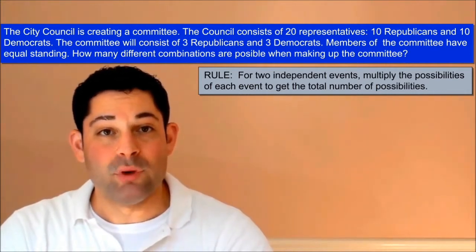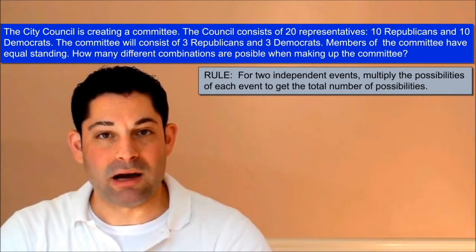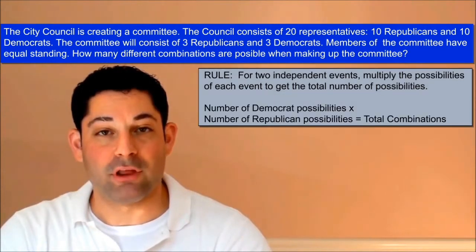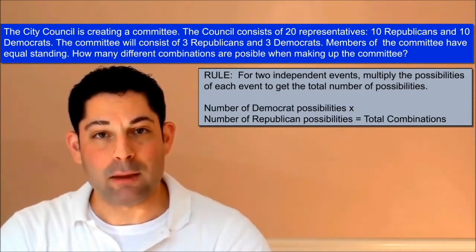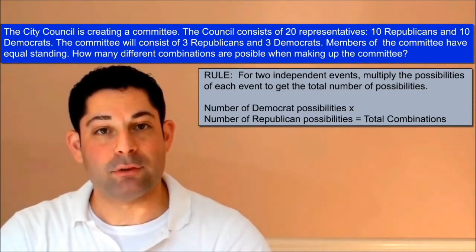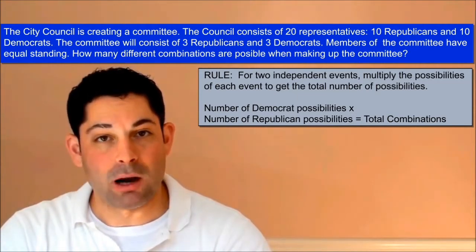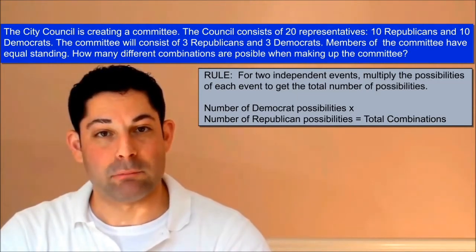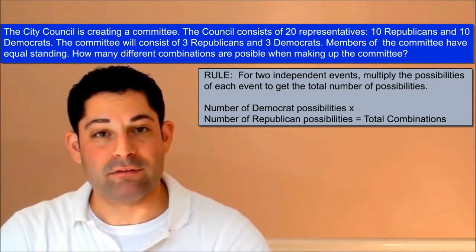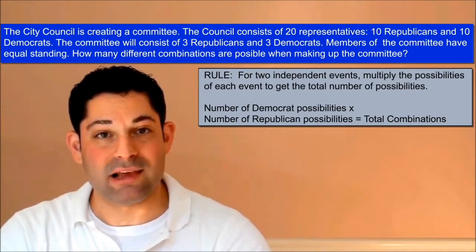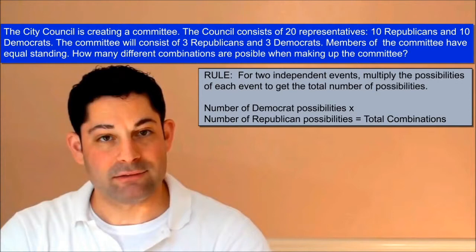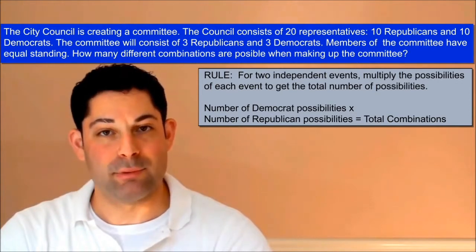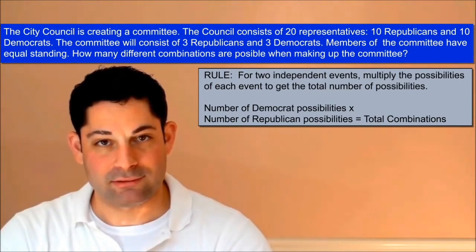In other words, we first find how many combinations are possible in choosing 3 Democrats from 10 Democrats. Then we find how many combinations are possible in choosing 3 Republicans from 10 Republicans. The product of these outcomes will tell us how many combinations are possible in choosing 3 Democrats from 10 Democrats and 3 Republicans from 10 Republicans.